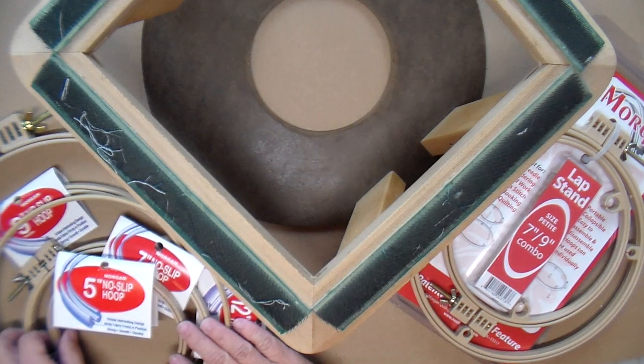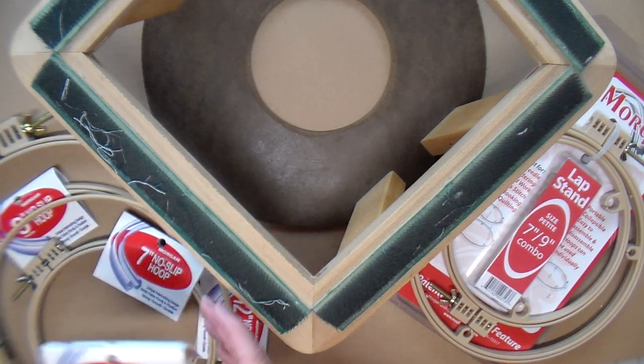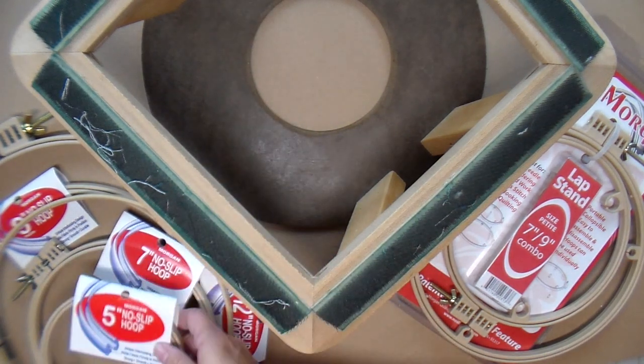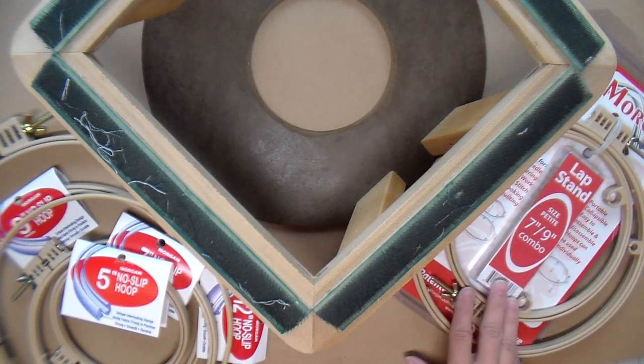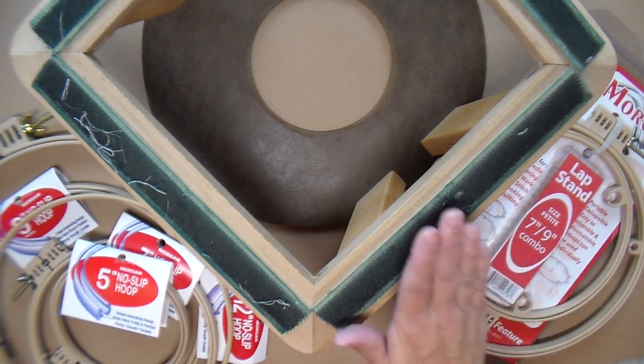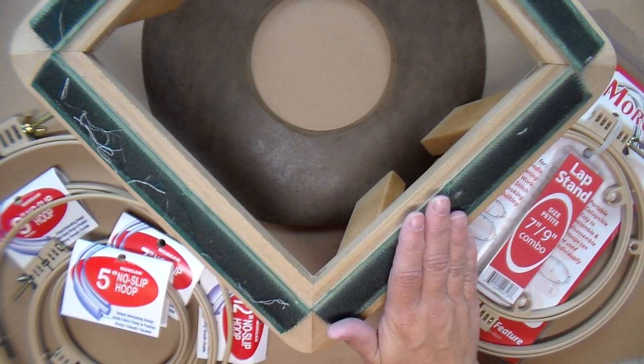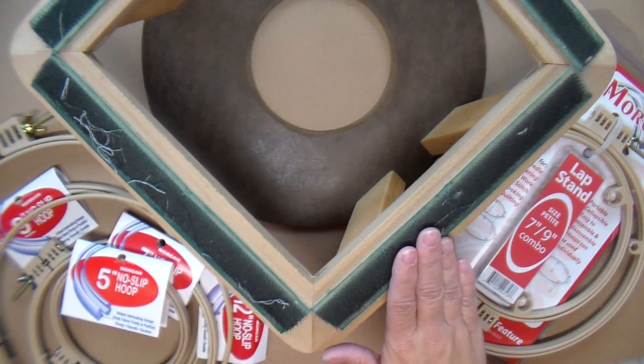In terms of price the non-slip hoops are the cheapest option. The lap stands are next in price. And the gripper strip frames are the most expensive of the three.